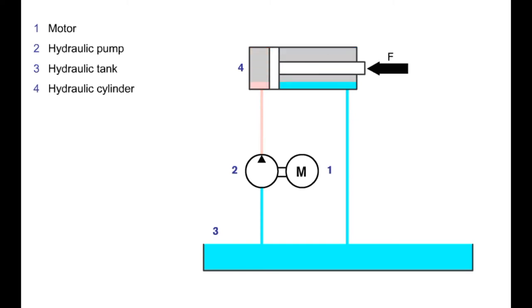Further elements will be added to the hydraulic system step by step in order to prevent the system at standstill from being completely drained by the hydraulic pump, prevent the loaded cylinder from retracting when the hydraulic pump is at standstill, limit the load of the cylinder, control the direction of movement of the cylinder, and regulate the speed of the cylinder.